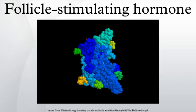FSH is a 35.5 kD glycoprotein dimer. Its structure is similar to those of LH, thyroid-stimulating hormone, and human chorionic gonadotropin. The protein dimer contains two polypeptide units, labeled alpha and beta subunits.